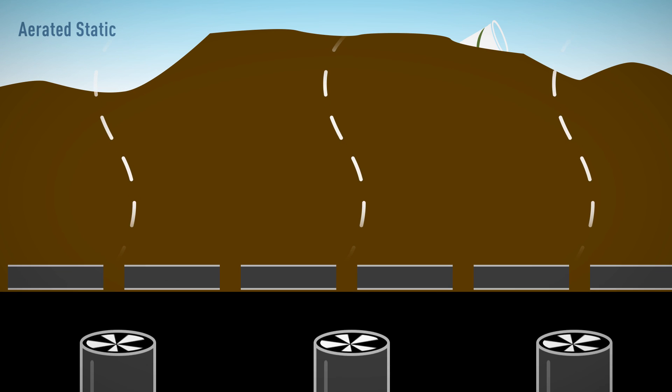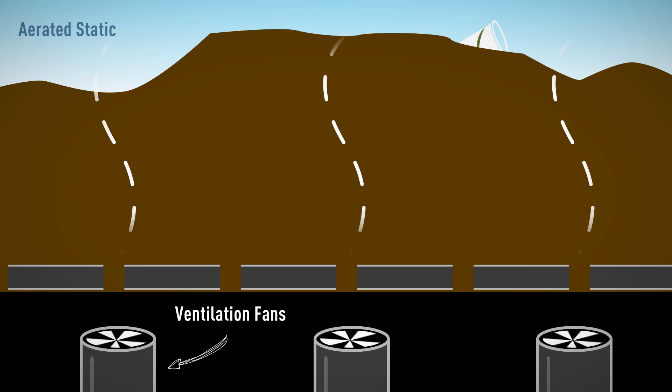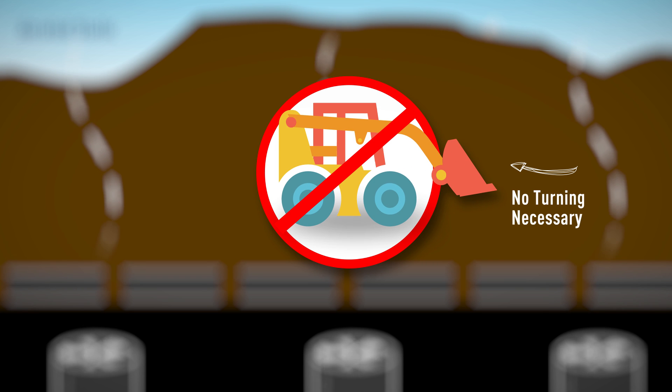Aerated static composting achieves aeration by ventilation fans forcing air through the pile and therefore does not have to be physically turned.